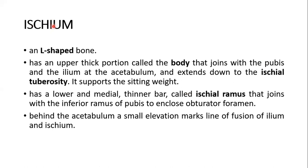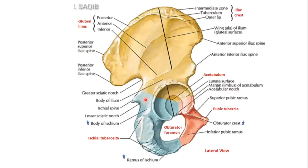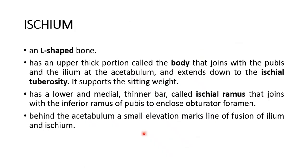A few words about the ischium. The ischium is an L-shaped bone with an upper thick portion called the body, which joins with the pubis and ilium at the acetabulum and extends down to the ischial tuberosity — the sitting bone. It has a lower and medial thinner bar called the ischial ramus that joins with the inferior ramus of the pubis to enclose the obturator foramen. Behind the acetabulum, a small elevation marks the line of fusion of ilium and ischium.